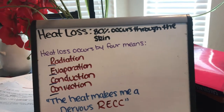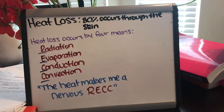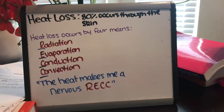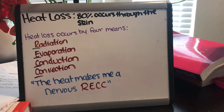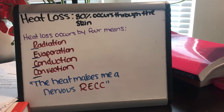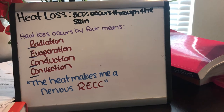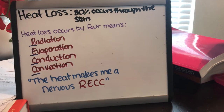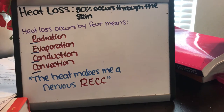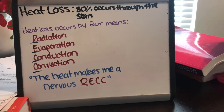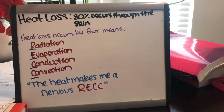One way to remember the four terms for heat loss is the mnemonic WREC — the heat makes me a nervous wreck. That stands for radiation, evaporation, conduction, and convection.